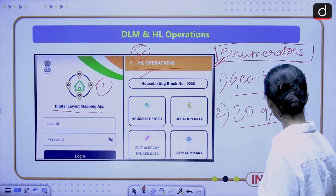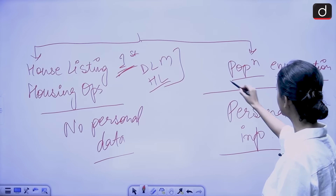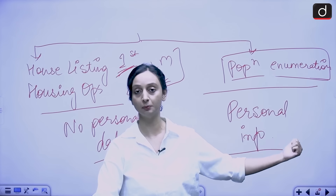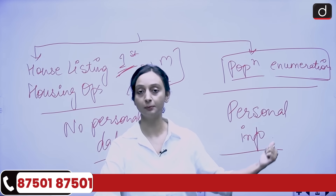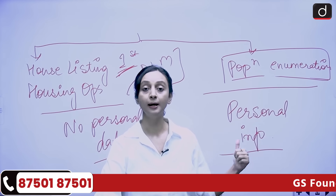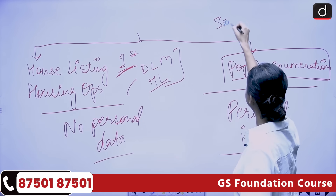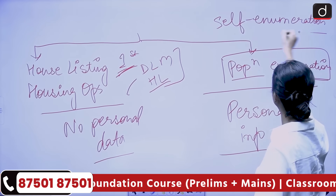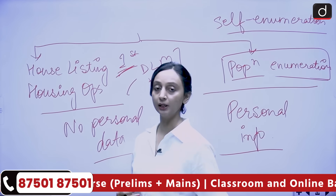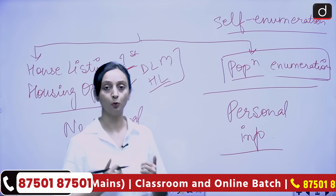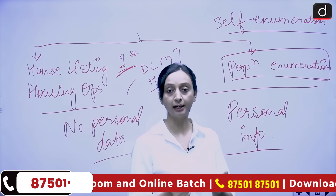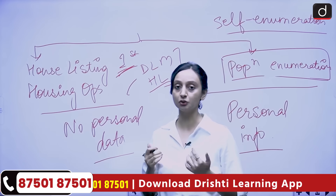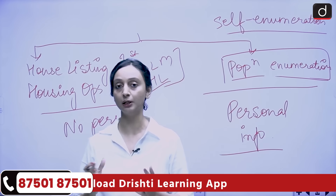We also have the second phase — the population enumeration phase — which is currently under trial run, including public participation through self-enumeration. Self-enumeration is a process by which citizens can simply go to a website or portal and enter their own personal information, without requiring an enumerator to physically come and take down that information as was done earlier.